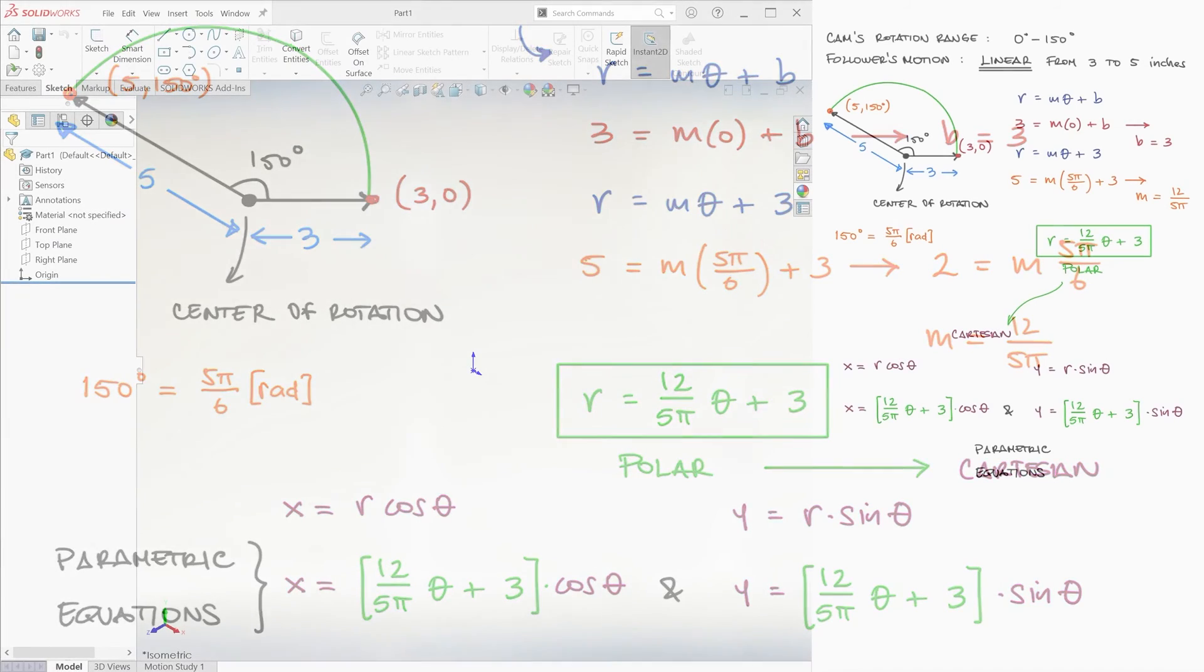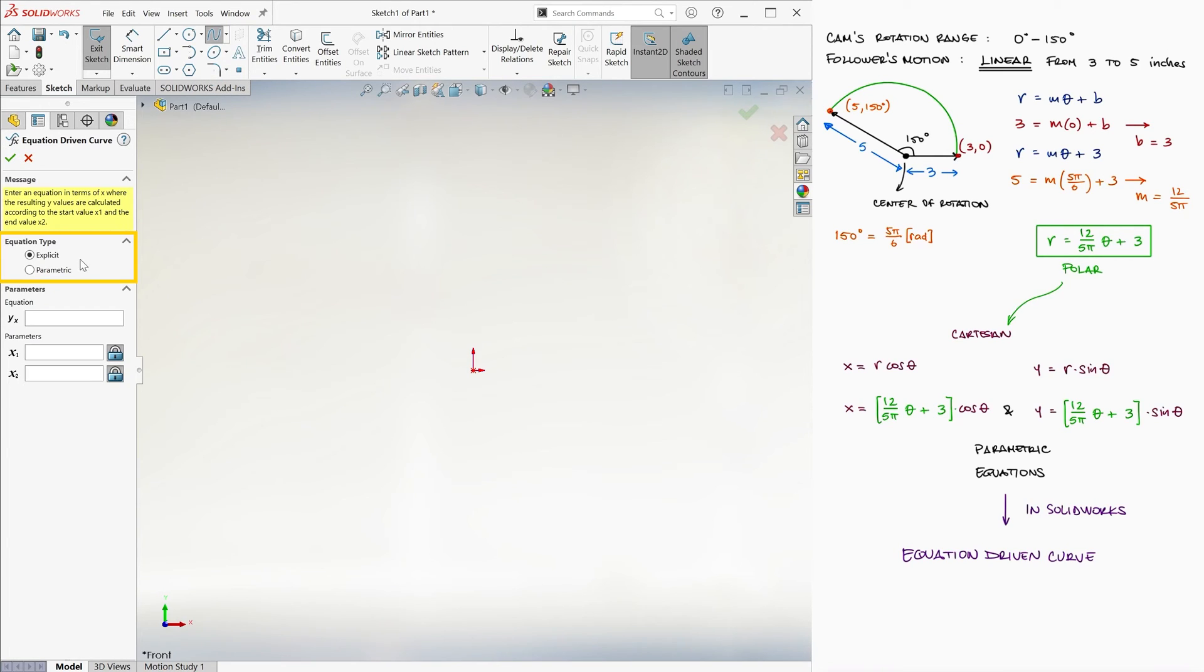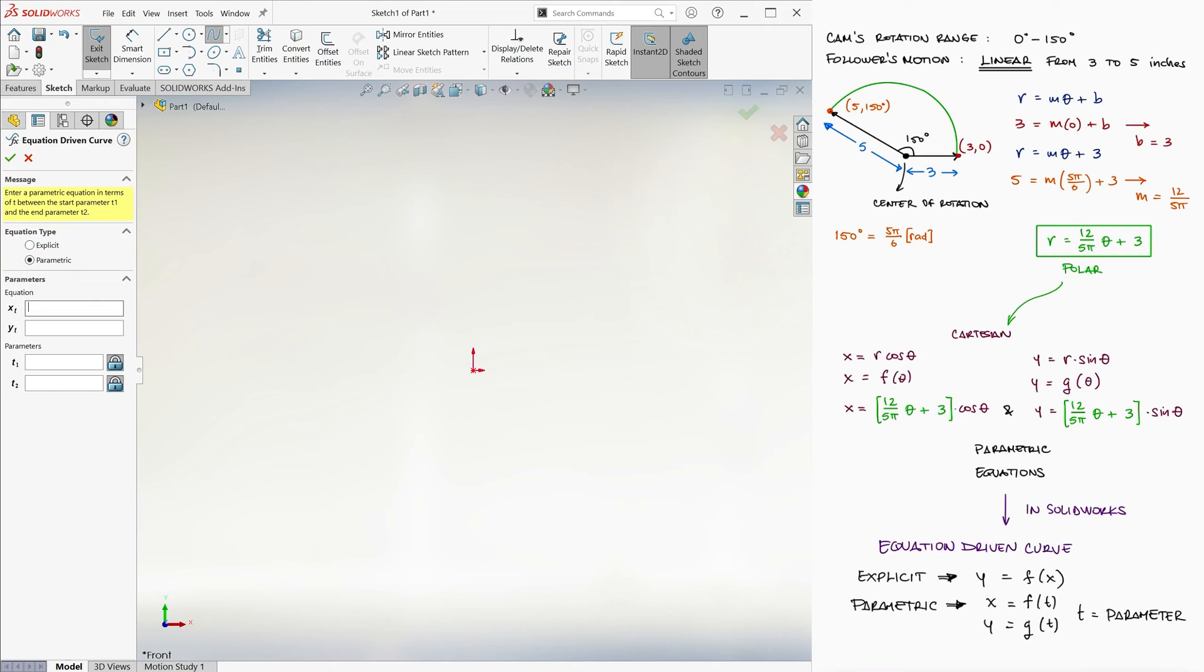So let's create our part in SolidWorks, easiest part of these lectures. If we go into a sketch, and let's say choose the front plane, we can hit the spline drop-down options to reveal the equation-driven curve function. The equation type can either be explicit or parametric. Explicit would be a typical y equals to a function of x, and parametric would be x and y in terms of a parametric variable t, for example. In our case, t would be theta. So we choose parametric, and we type the functions into the x and y boxes. x is equal to 12/(5π) times t plus 3, all of this times cosine of t. And y would be exactly the same first term, which is what describes the radius, times sine instead of cosine. And we want our theta, in this case t, to go from 0 to 5π/6. And done!